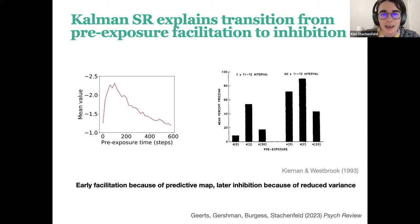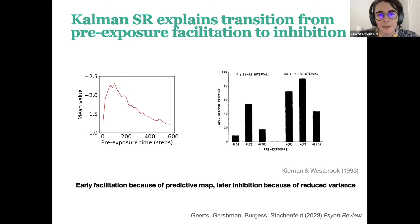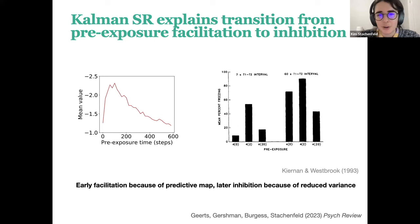As a function of time spent in the environment, there's a transition from facilitation to inhibition. At first the animal builds up the first-order statistic — the expectation about state occupancy. Then later, once it has learned the first-order statistics, it starts filling in the second-order statistics too — not just predictions about where you'll go, but certainty and confidence in those predictions. This was reported by Kiernan and Westbrook in 1993: after two minutes of pre-exposure you get a strong conditioned response, but after 20 minutes you start getting latent inhibition.